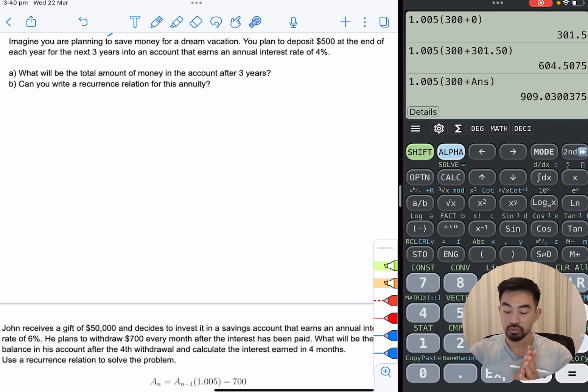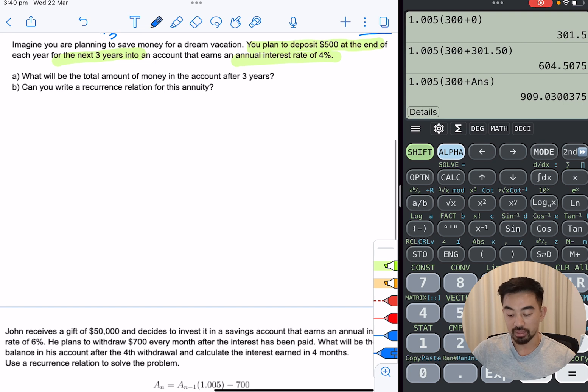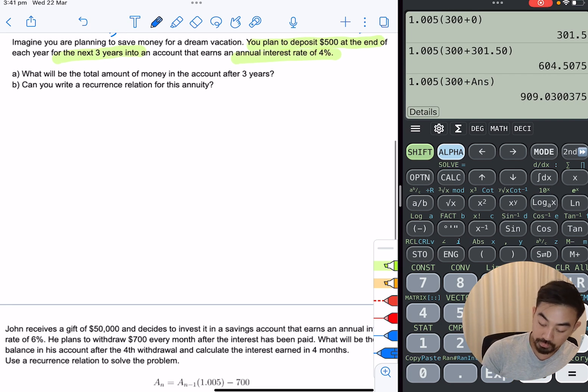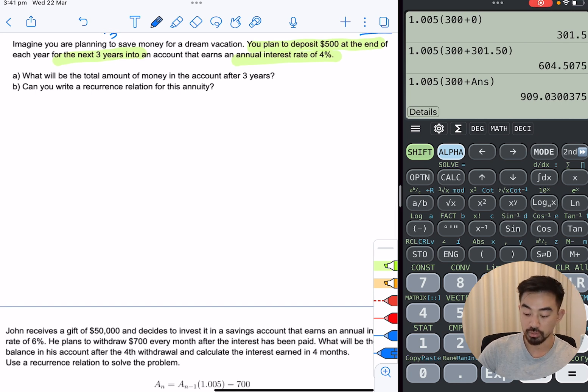Imagine you're planning to save money for a dream vacation. You plan to deposit $500 at the end of each year. So there you go. $500 at the end this time for the next three years into an account that earns annual interest rate of 4%. So everything's in annually. So remember like in compound interest, you're going to make all your periods and your ends the same. So in this case, it's $500 at the end of each year. And also it's compounding at 4% per year. What will be the total amount of money in the account after three years? So here's an example where they don't give you the recurrence relation upfront and they want you to work it out, but in part B we'll write one. So just think about it. You're starting off depositing $500 at the end of each year. So that means for the first year, you're only going to have that $500 because it's not going to get any interest because it's getting put in at the end of the year. Remember it has to be in for the entire period for it to get interest. So in the first year, you're only going to have $500.